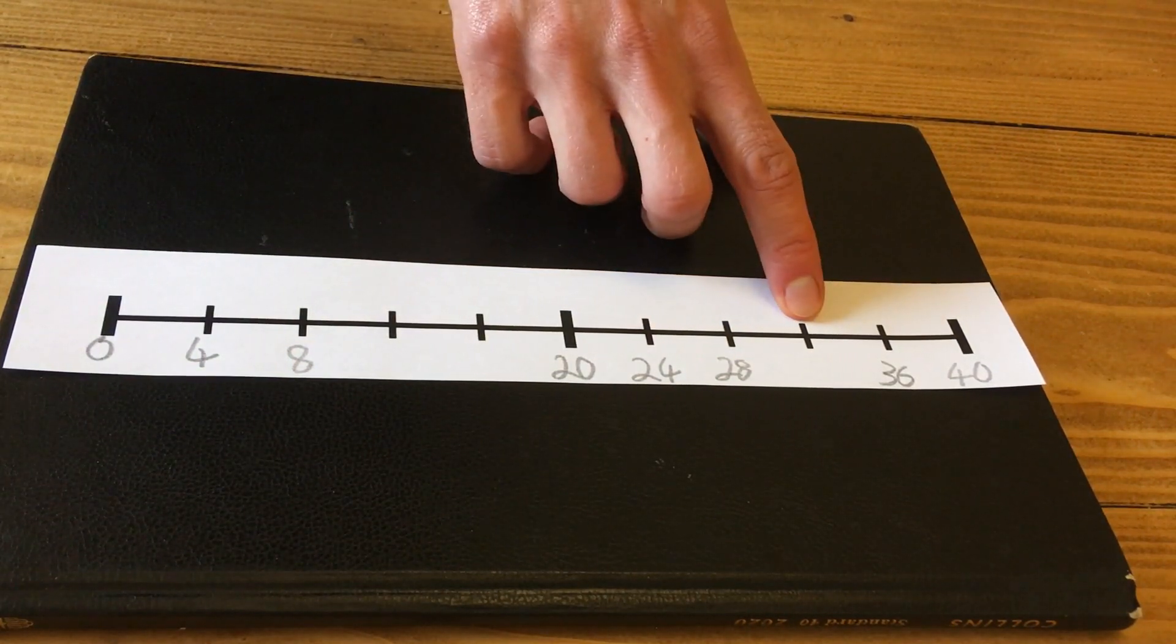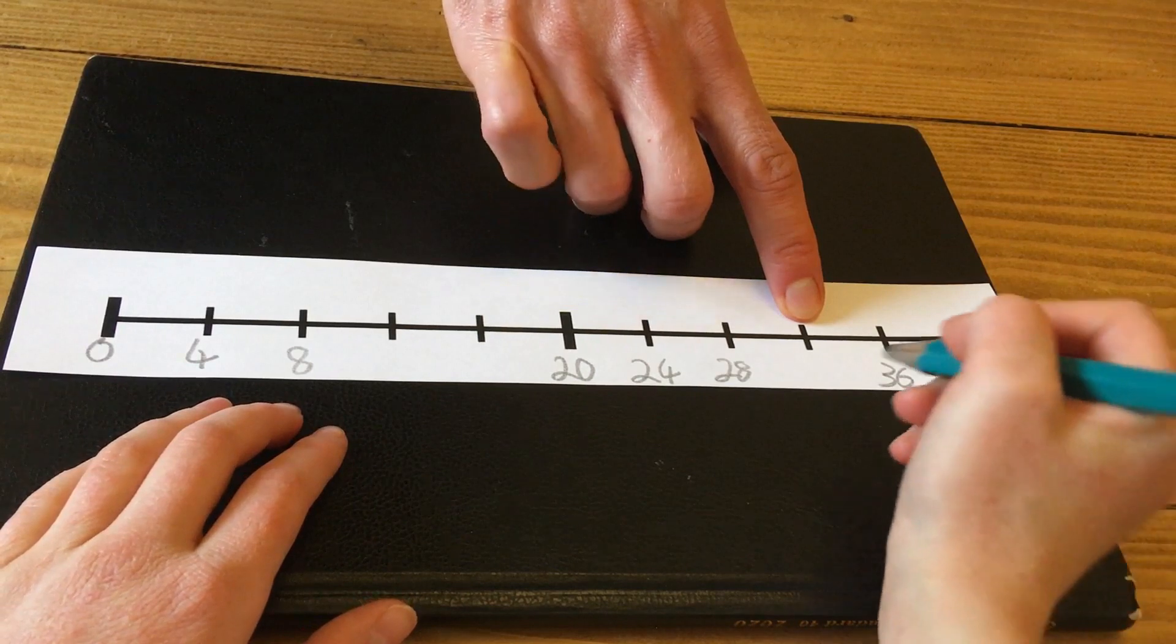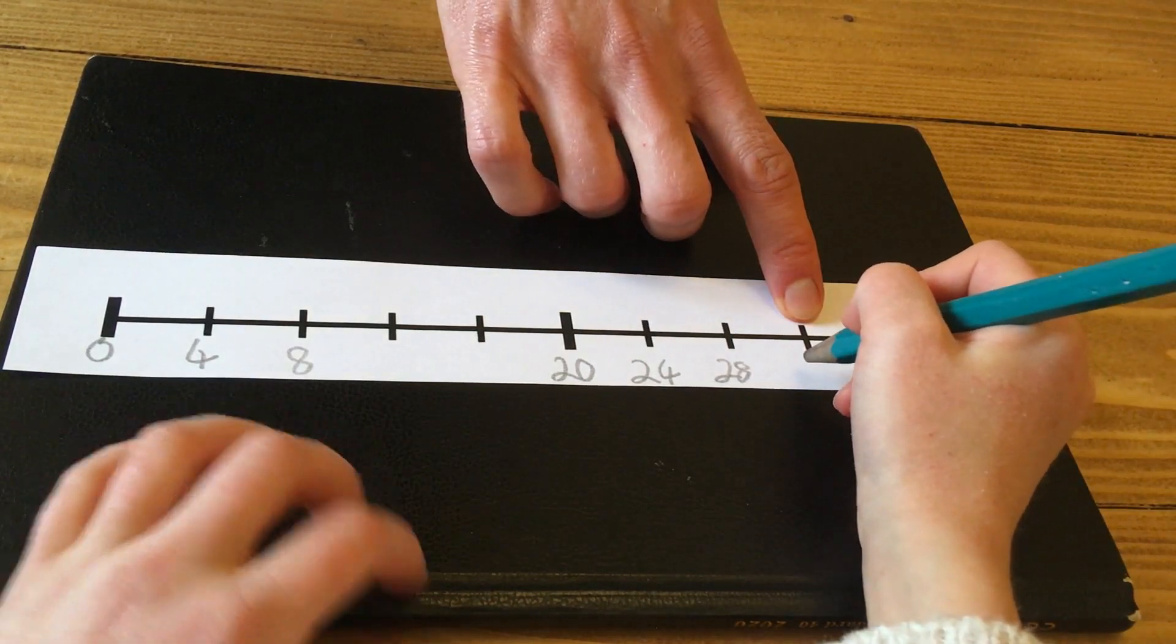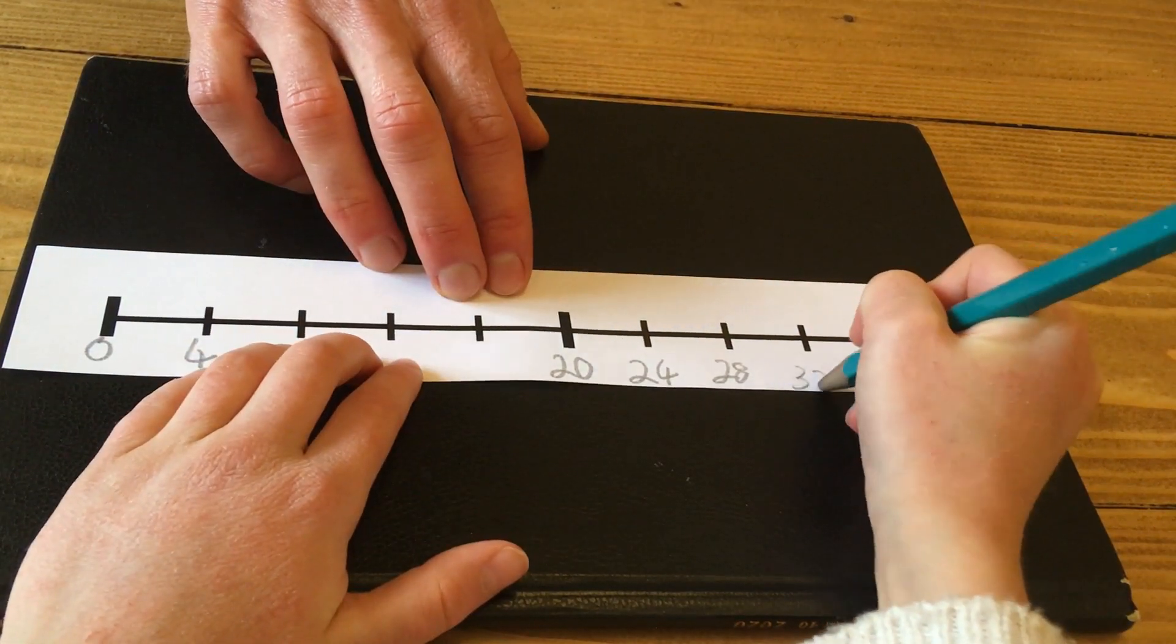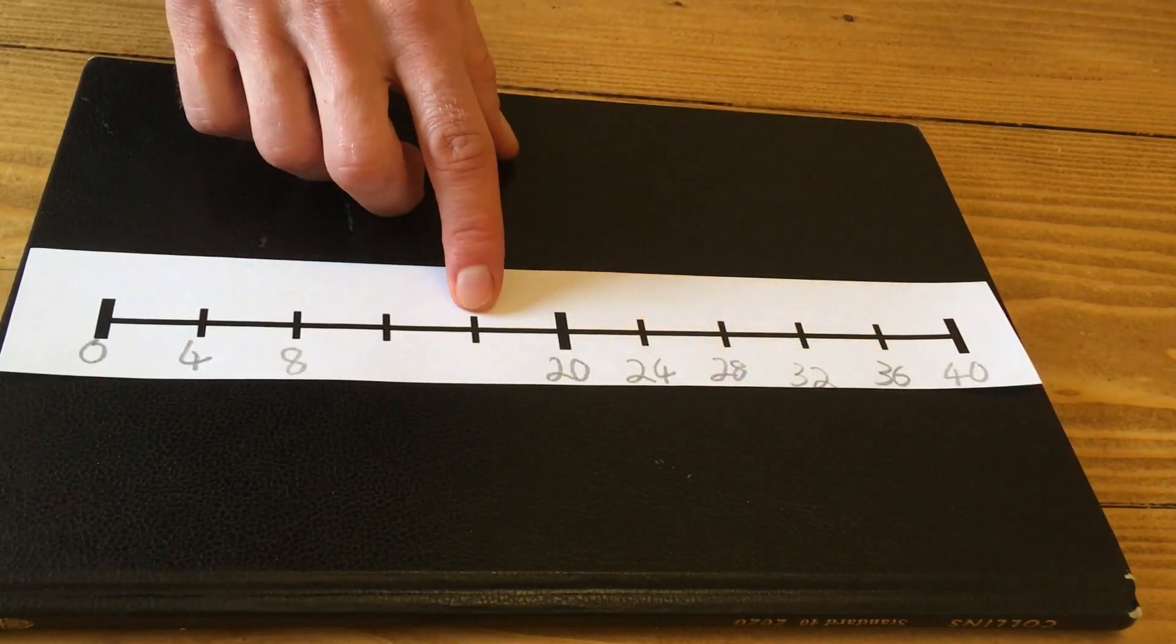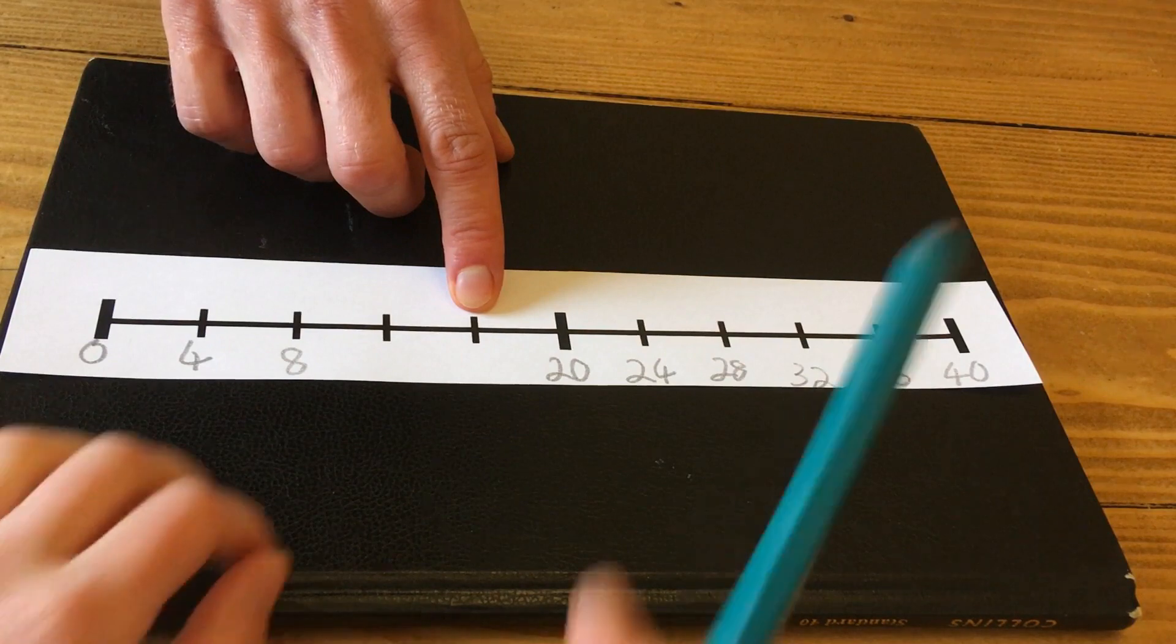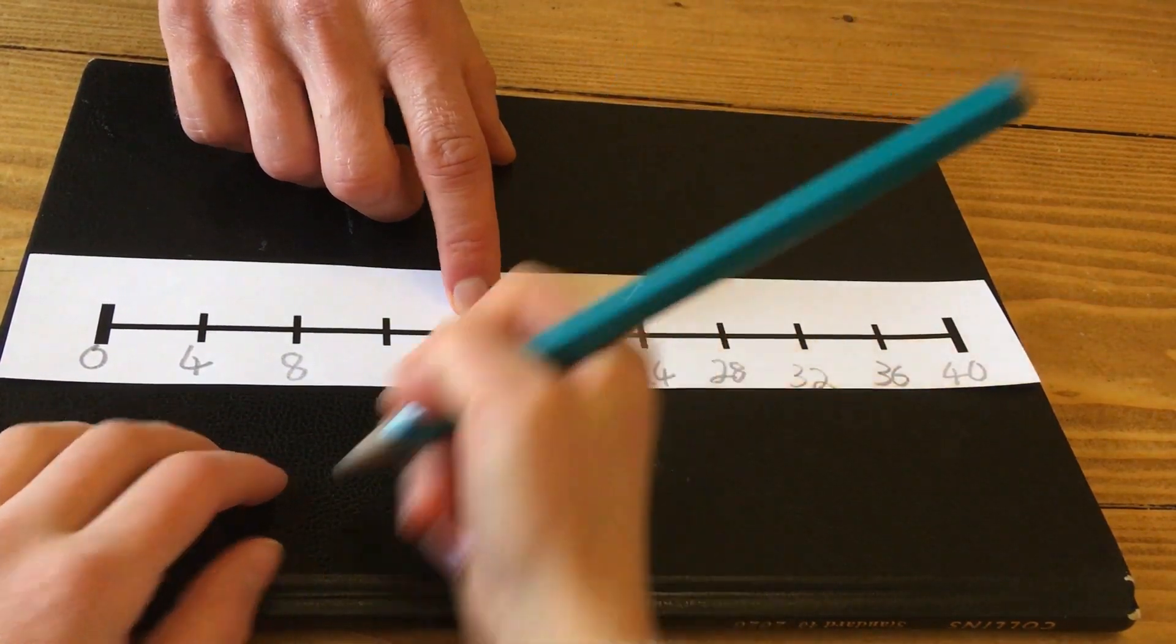This one here? That one is eight times four, which is thirty-two. Well done. And let's go for this one. That one is sixteen. Sixteen. Four less than twenty.